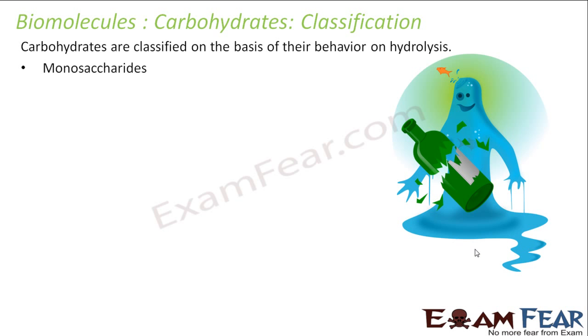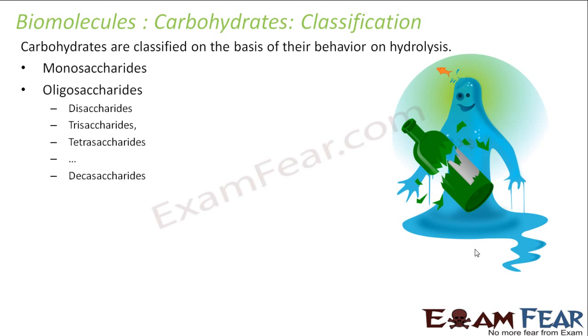The first category is monosaccharides. The next is oligosaccharides, which includes disaccharides, trisaccharides, tetrasaccharides, all the way to decasaccharides. And then we have polysaccharides.